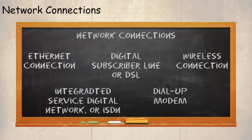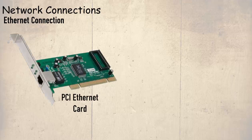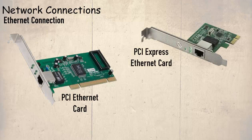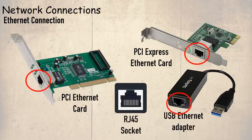The first and what was the most popular method of connecting to a network was using an Ethernet connection. Here we have the old PCI Ethernet card, a PCI Express Ethernet card, and a USB Ethernet adapter. All have one thing in common and that is an RJ45 socket that allows it to be connected to a network.